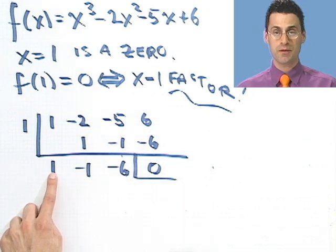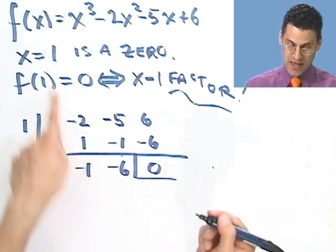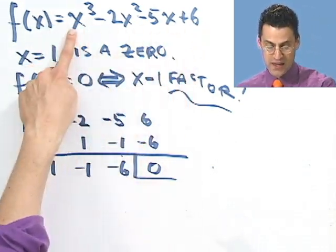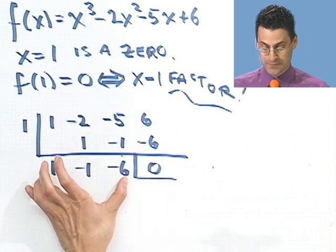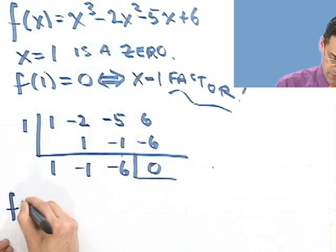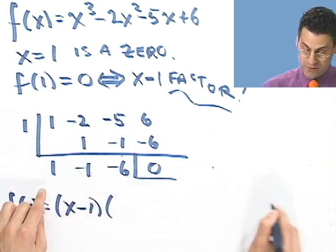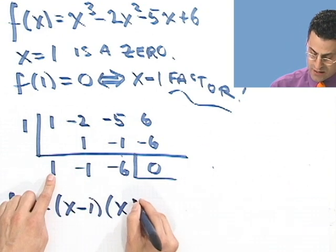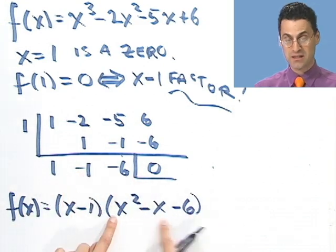And this is what's left over. That's the x squared part, that's the x part, that's the constant part. So what I see is f(x), this whole complicated thing, is just x minus 1 times this thing. And so what I see here is f(x) equals x minus 1, there's the factor, and when I divide it out, I see an x squared minus x minus 6. Do you see how I read off the coefficients right there?